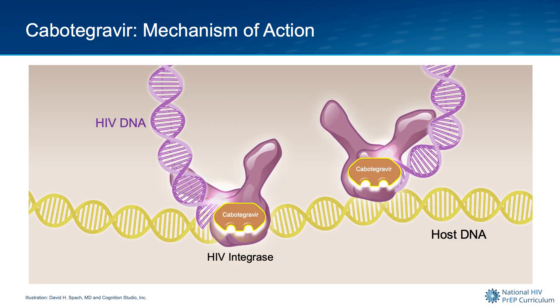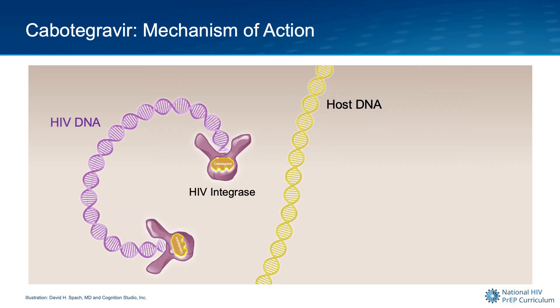This binding by cabotegravir blocks the active site of the HIV integrase enzyme. So if cabotegravir is bound to the HIV integrase, this enzyme is not able to initiate the splicing open of the human DNA, which results in the failure of the integrase to transfer the strand of HIV DNA into the human DNA — hence the name integrase strand transfer inhibitor.